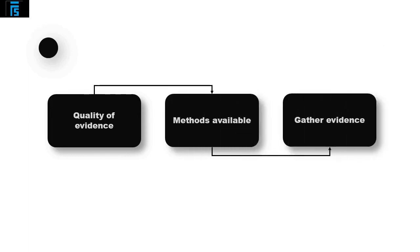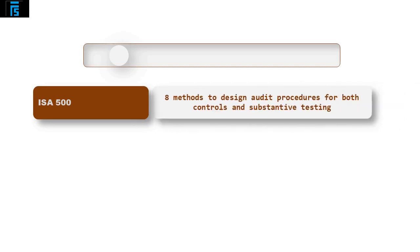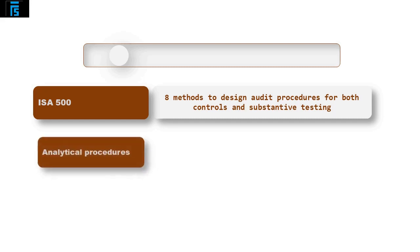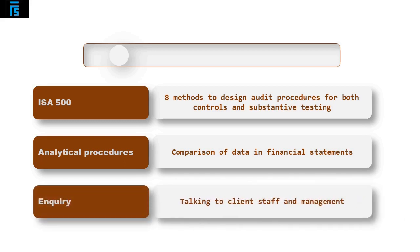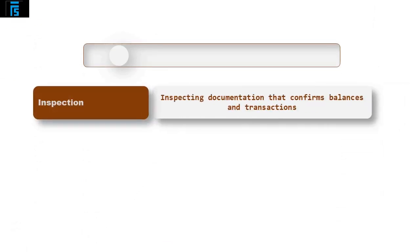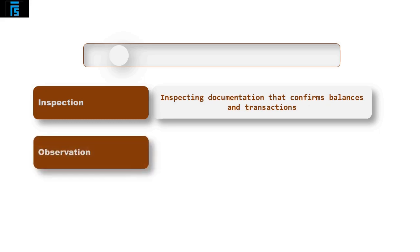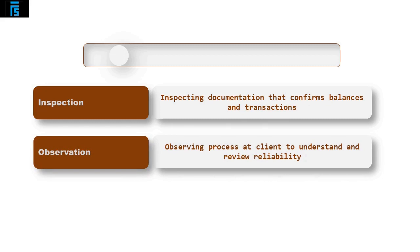Now we must discuss the methods available to gather evidence. ISA 500 gives eight methods: analytical procedures — comparing data in the financial statements to gather evidence on possible misstatements; inquiry — talking to the client's staff and management to obtain explanations; inspection — inspecting documentation that confirms balances and transactions; observation — observing processes at the client to understand and review reliability.